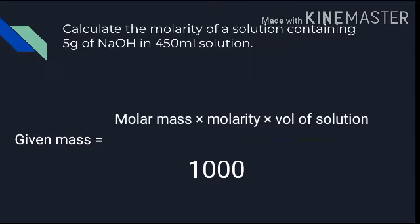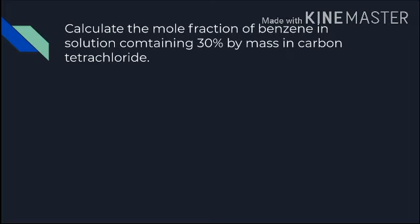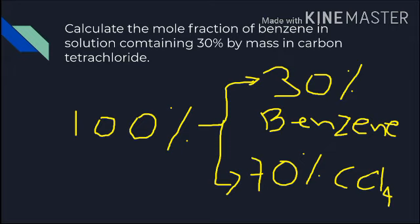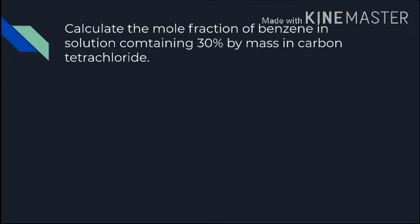Next question: calculate the mole fraction of benzene in a solution containing 30% by mass in carbon tetrachloride. We need to calculate the mole fraction of benzene. The given information is that 30% benzene is dissolved in carbon tetrachloride. Since the solution is always 100%, 30% is benzene and 70% is carbon tetrachloride. So we have 30 grams benzene dissolved in 70 grams carbon tetrachloride.